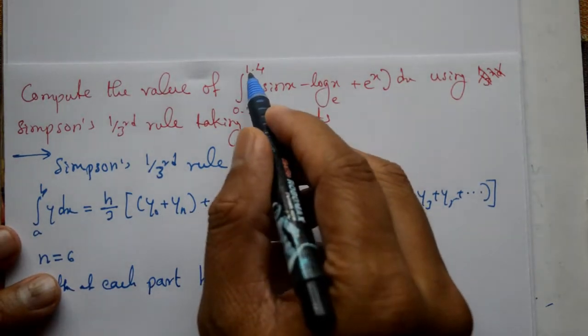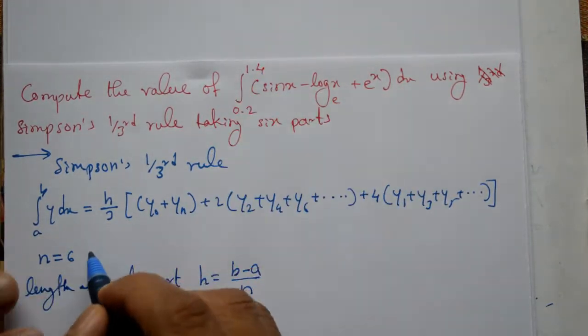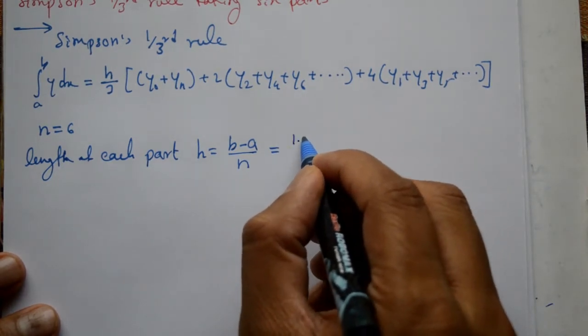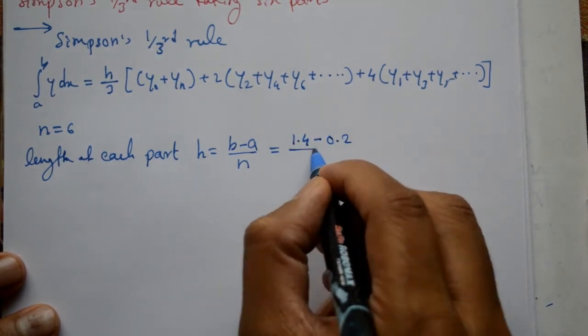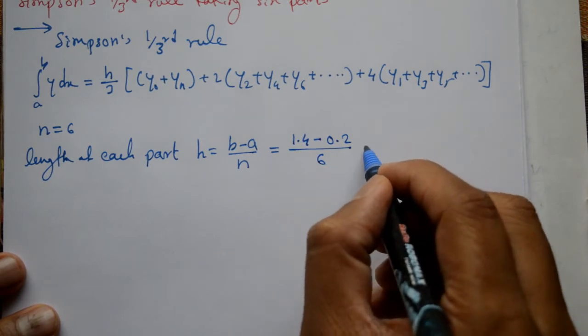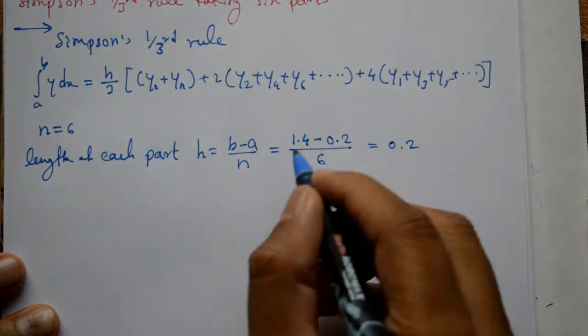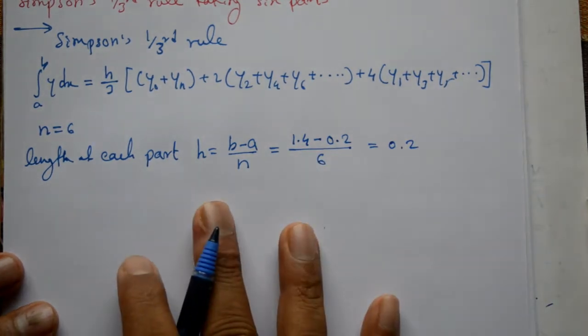Integration from a to b, where a is the first value, b is the last. That equals 1.4 minus 0.2 divided by 6, which is very simple. 1.2 divided by 6 equals 0.2.